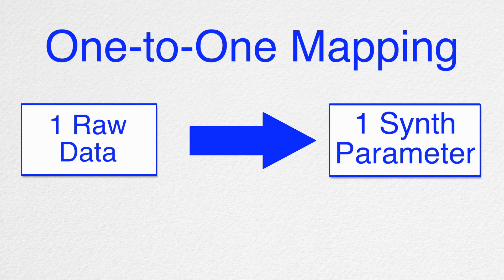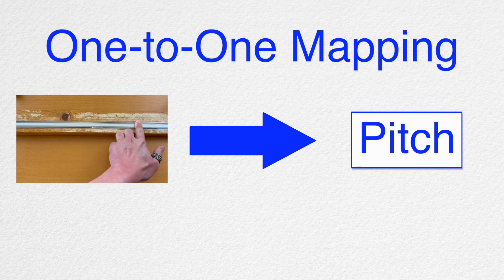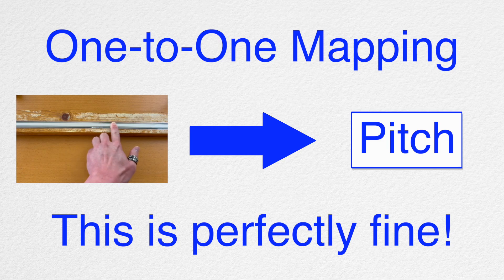So this illustrates one of the issues of one-to-one mapping, which is where we map one sensor data to only one synth parameter. An example of this is mapping the finger position to the pitch as we did earlier. This is perfectly fine to do, but this approach can be inefficient.